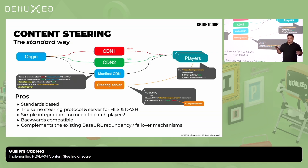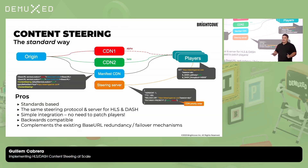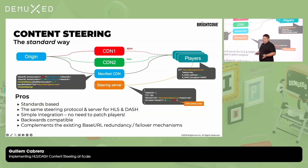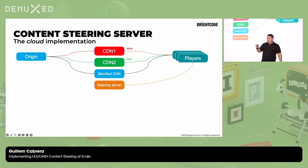The advantages of this proposal are that it is standard-based — the same steering protocol and server can be used for both HLS and Dash. It's very simple to integrate: no need to patch players, include plugins, or anything like that — it just comes out of the box. It's backward compatible because including several base URLs in the manifest is something many people are already doing, and it complements the failover mechanisms still used in the industry.